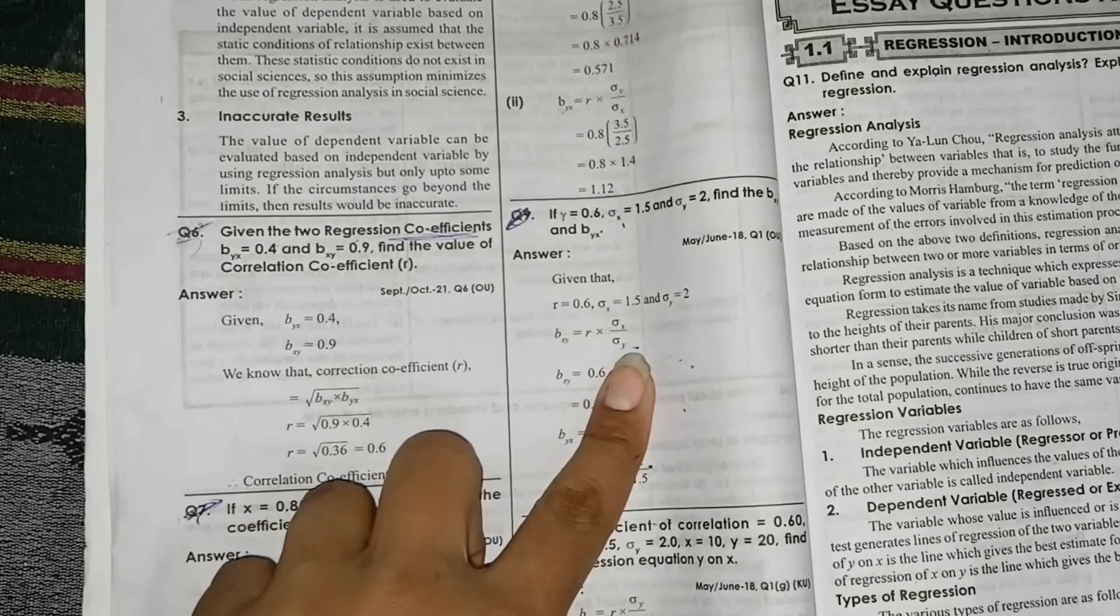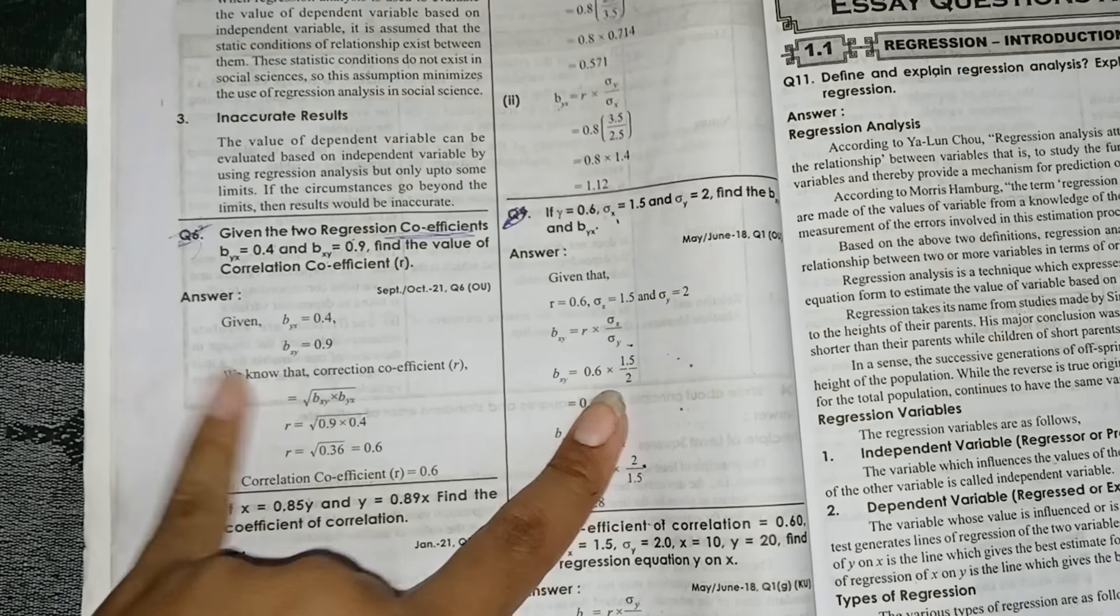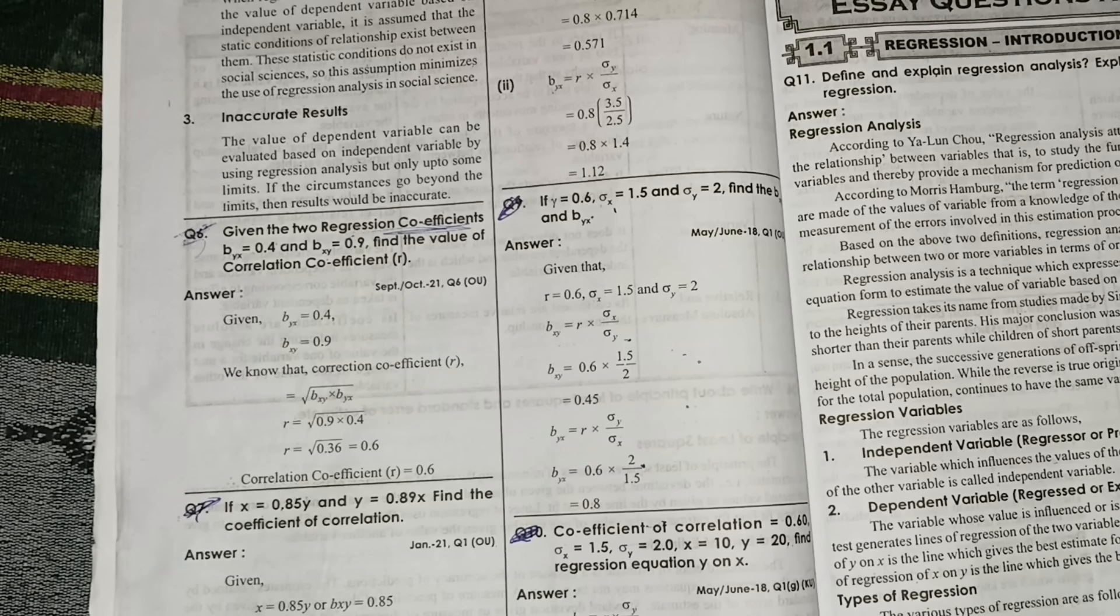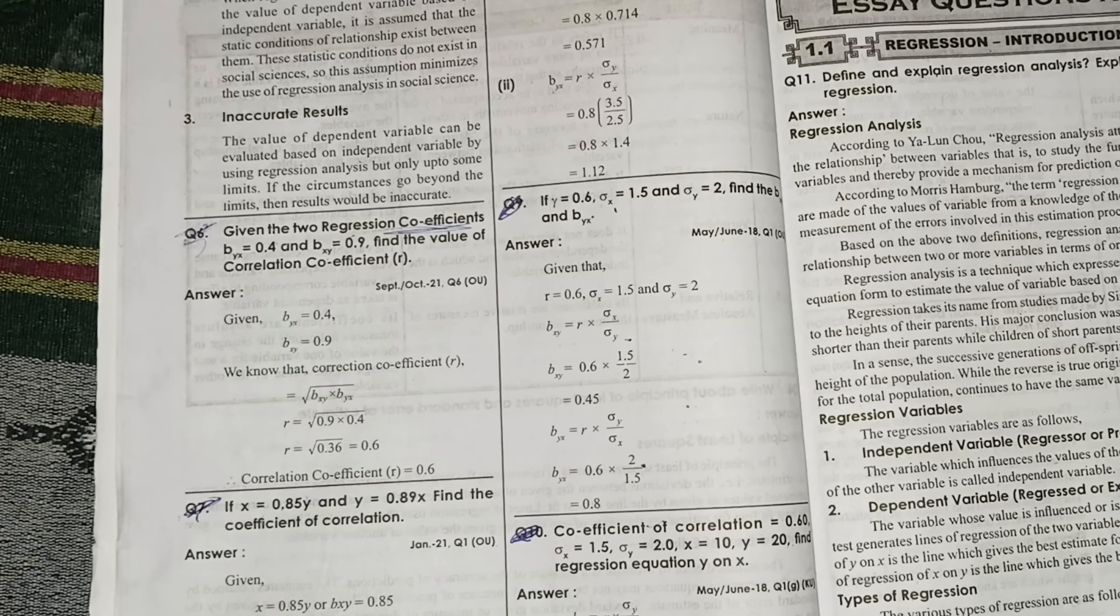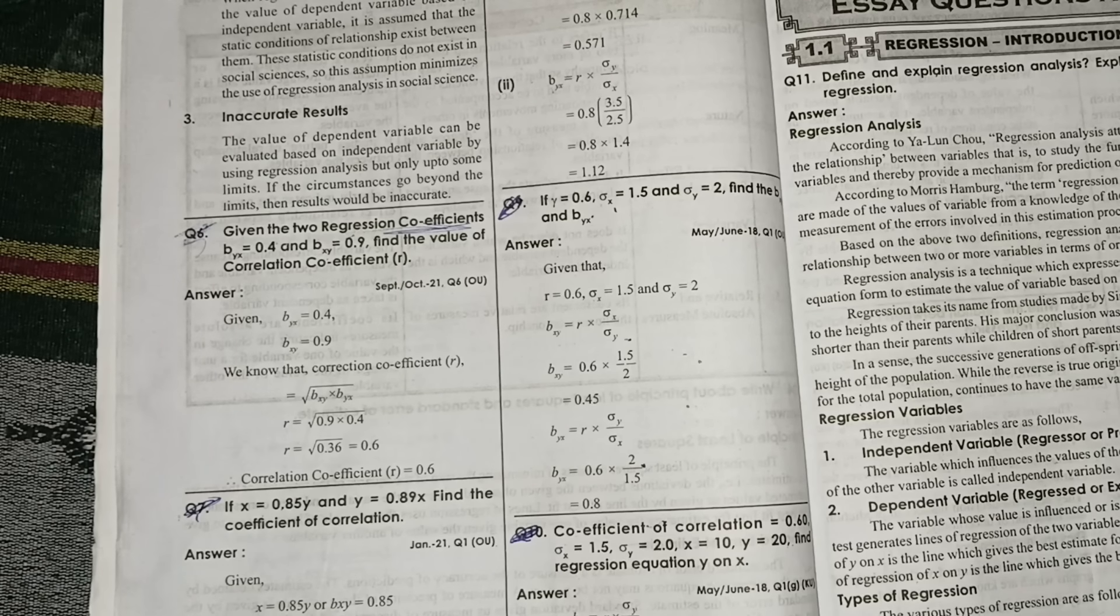So here, this is also you practice it. Compulsory we can expect this type of questions. Sixth question as well as the ninth question, these two questions also as homework. This is the compulsory problematic question in short from unit number one. Compulsory 99.9 percent we can expect it if they are asking problematic for four marks from unit number one.